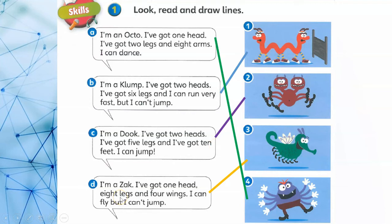I'm a Zack. I've got one head, eight legs, four wings, and I can fly high, but I can't jump.